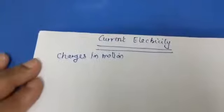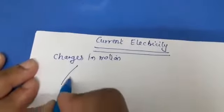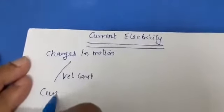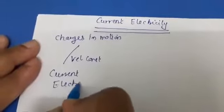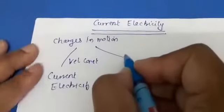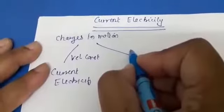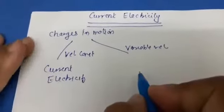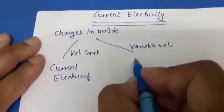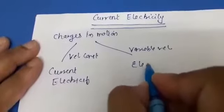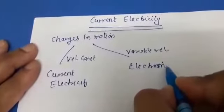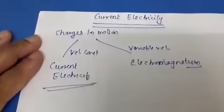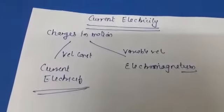When charges are moving with constant velocity, we treat it as current electricity. But when charges are moving such that velocity is changing — that means there is a variable velocity concept — when there is accelerated motion, then the concept of magnetism is introduced. That we will study in the coming chapters. Here we will study the basic concept of current electricity when the velocity is almost taken to be the same.